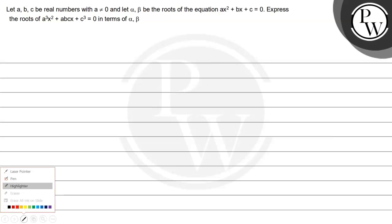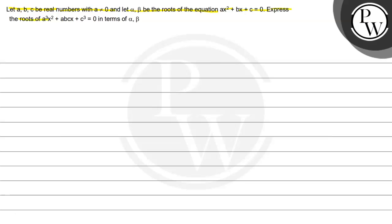Hello, let us read this question first. The question says: let a, b, c be real numbers with a not equal to 0, and let alpha and beta be the roots of the equation ax² + bx + c = 0. Express the roots of a³x² + abcx + c³ = 0 in terms of alpha and beta.